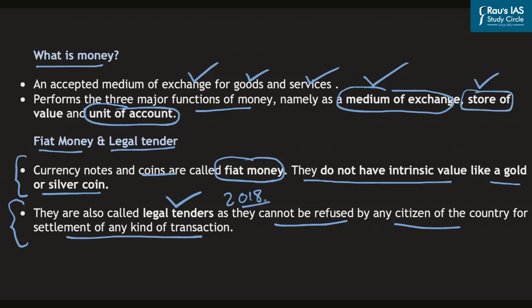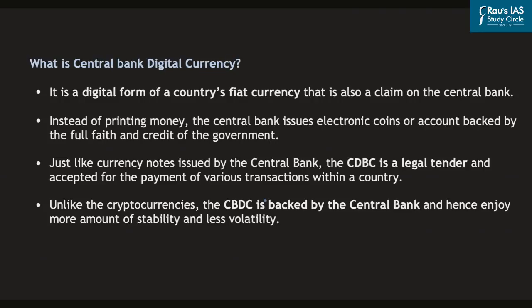Now that we are clear on what money is, its main functions, and what fiat money and legal tender money are, let us understand how central bank digital currency relates to these concepts. Central bank digital currency is simply a digital form of a country's fiat currency — it is also a claim on the central bank. Similar to fiat currency issued as cash, notes and coins, the digital currency is another type of fiat currency issued by the central bank, and similarly it will have a claim on the central bank.